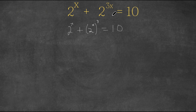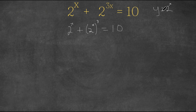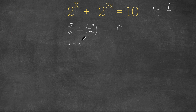Now what we're going to do is, since we have 2 to the power of x's, we're going to set 2 to the power of x equal to y, the variable y. So y equals 2 to the power of x. We're going to replace all the terms that have 2 to the power of x with y. So this rewrites to y plus y to the power of 3 equals 10.